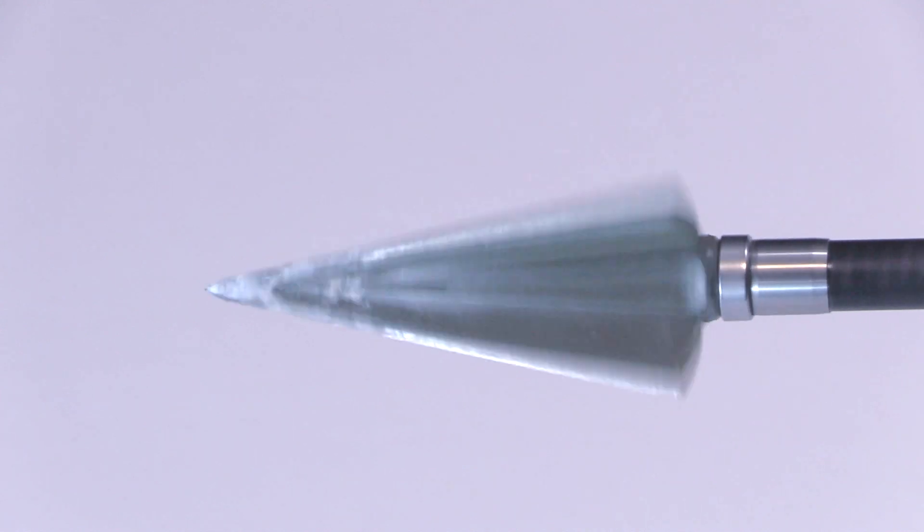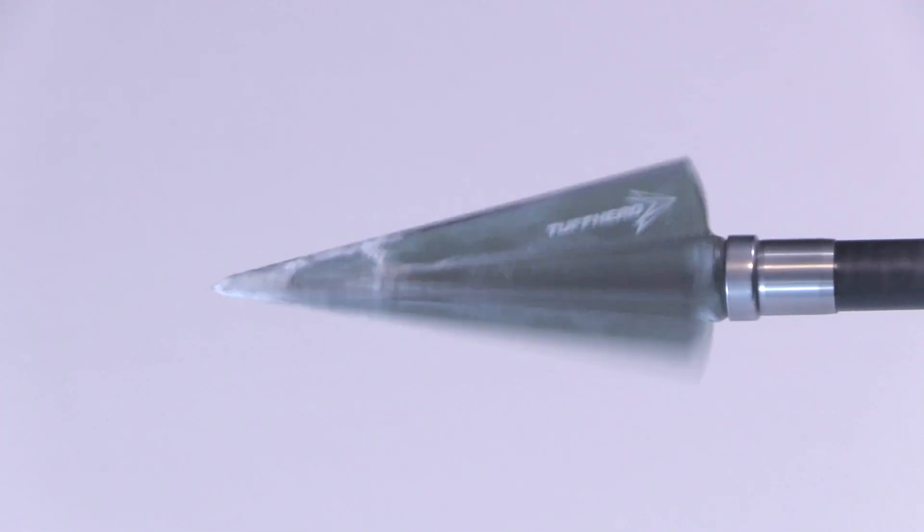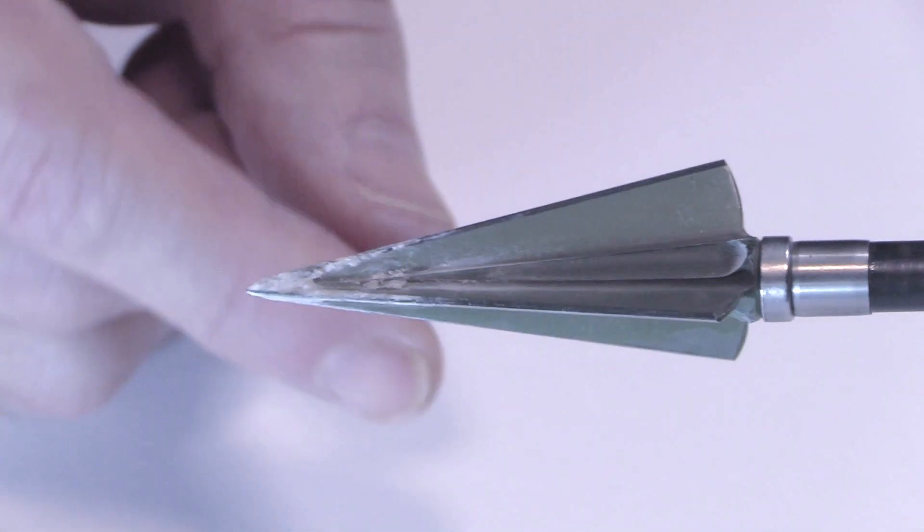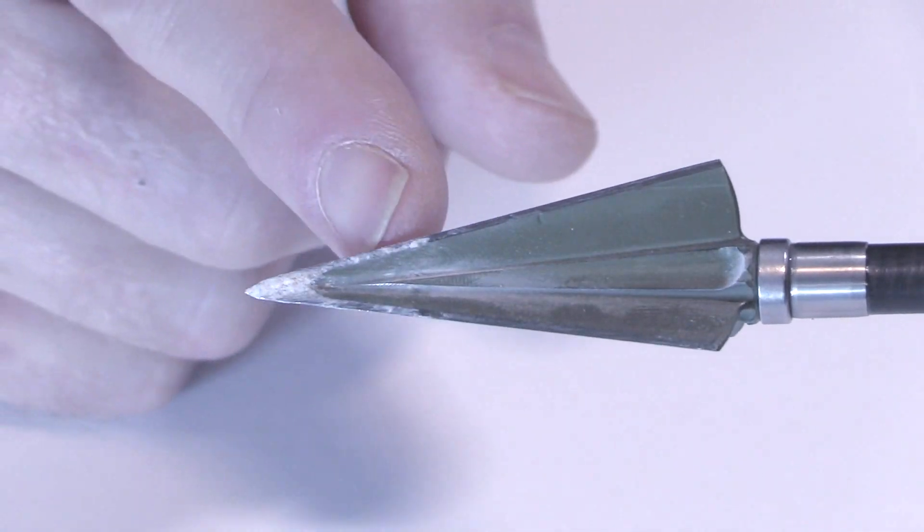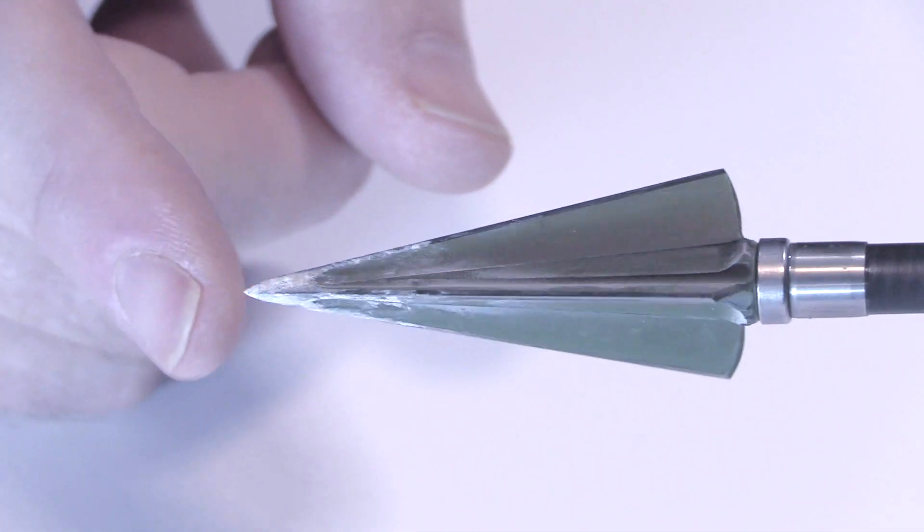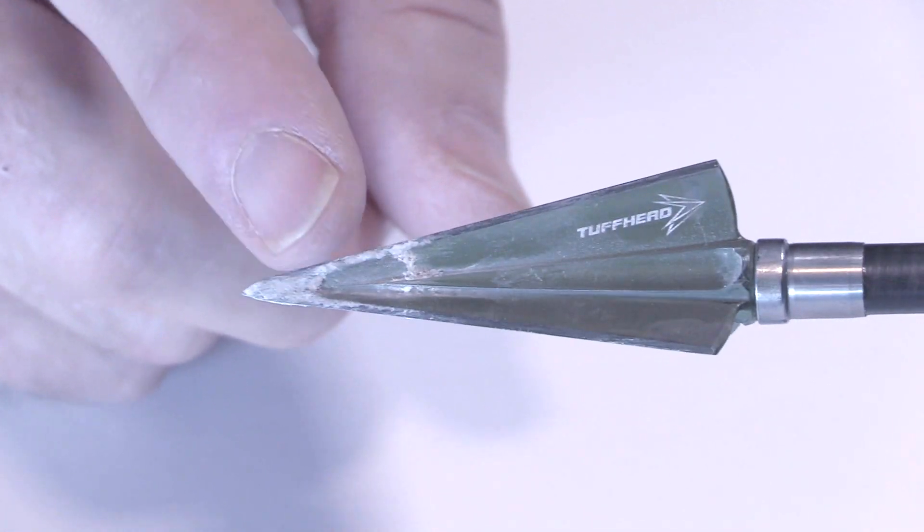Here's the Tough Head three-blade after the concrete as well as after the steel plate and it's just in pristine condition. Excellent durability. Penetrated very well into the concrete about that deep. Tip is very sharp, no rollover, the edges still sharp as well.